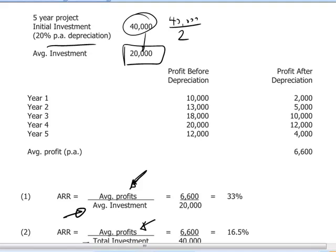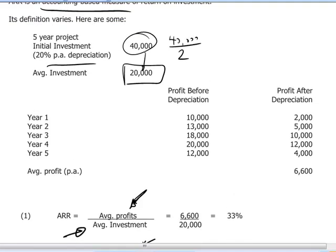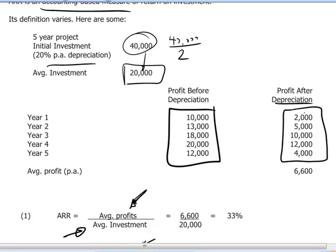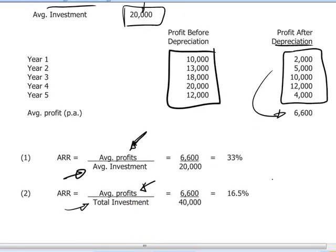Looking at profits — this is an accounting notion of profit — if we have profit before depreciation as shown here, we subtract the depreciation amounts and end up with profits over the five years as shown. The average profit is simply the arithmetic average: $6,600. Dividing $6,600 by the average investment of $20,000 gives us a 33% accounting rate of return.